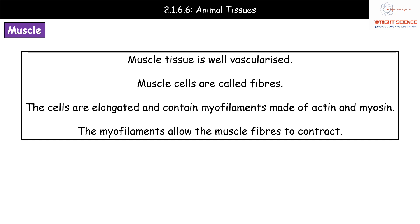The third type of tissue is muscle tissue. A key feature is that it's well vascularised, meaning it has a really good blood supply. Muscle cells are termed muscle fibres; they are elongated and contain myofilaments made of two proteins, actin and myosin. We'll look at muscle structure in more detail in module five. The key thing about these myofilaments is that they allow the muscle fibres to contract, which is vital for functions like moving parts of the body.